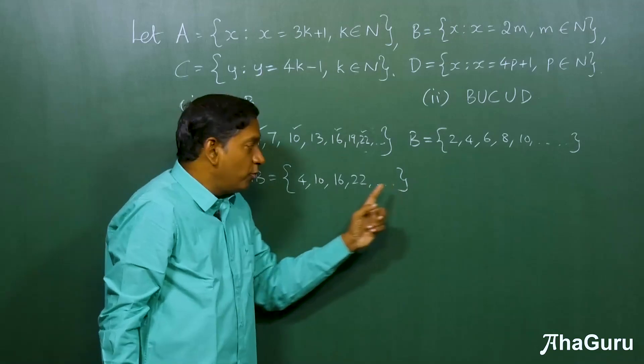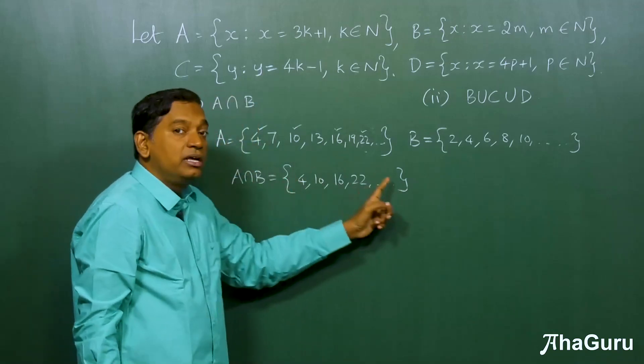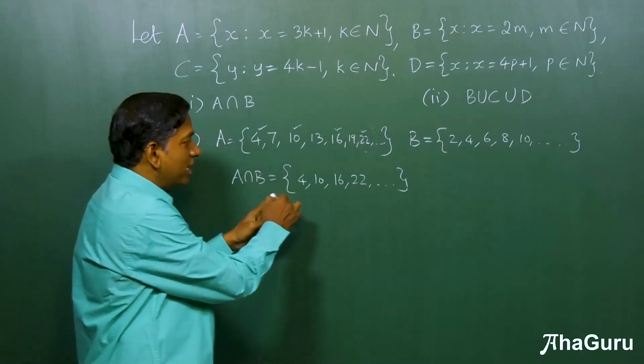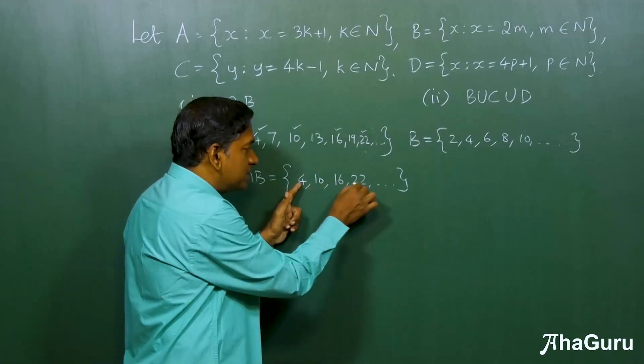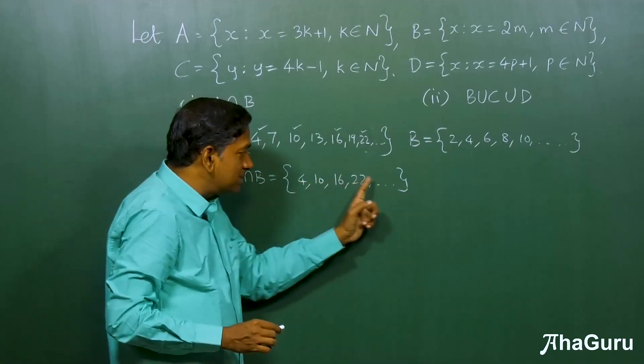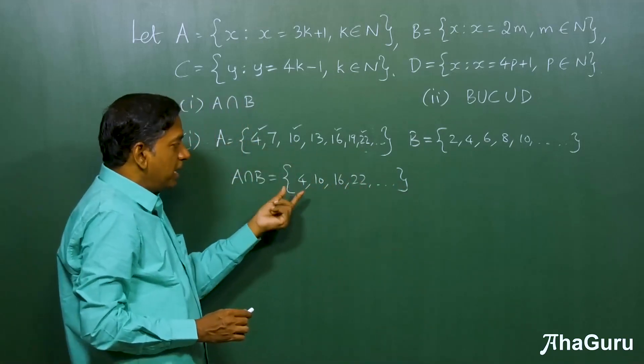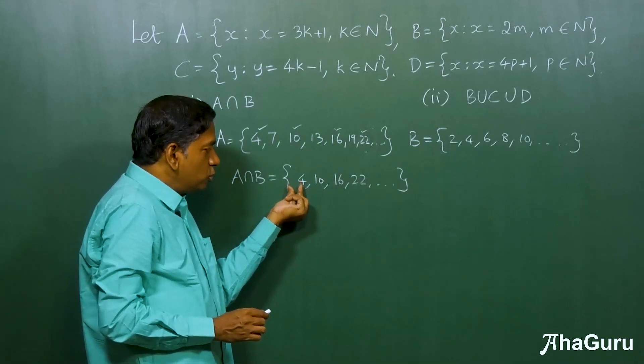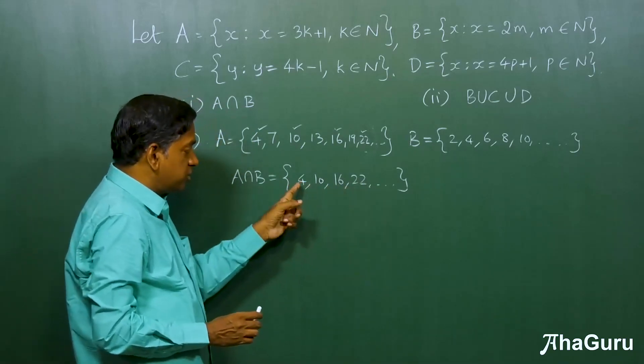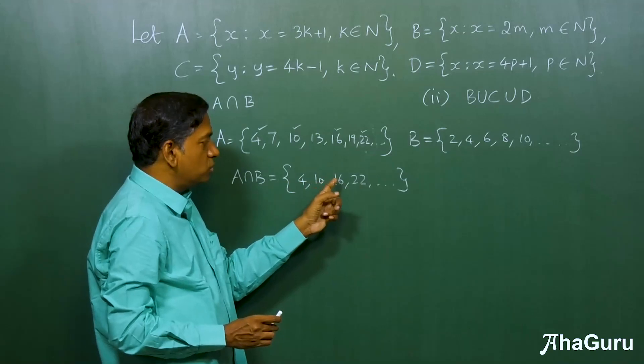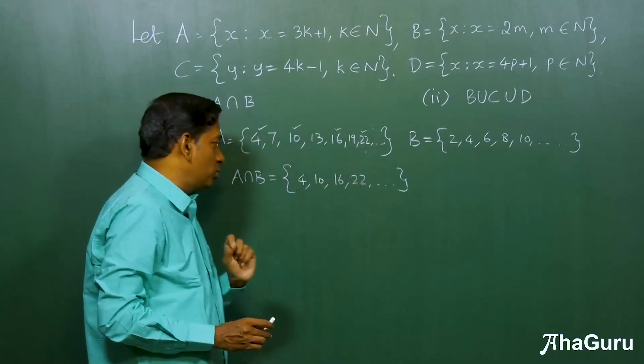Now, if we wanted to write this in set builder form, let's look at how we can write it. Let's look at the pattern, there is a difference of 6 between successive elements. And these are 2 less than multiples of 6. Just look at this. This is 6 minus 2, 12 minus 2, 18 minus 2, 24 minus 2, etc.